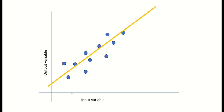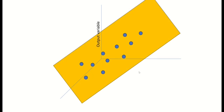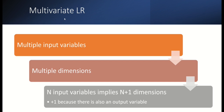Since we have one input variable here, that's why it's called univariate linear regression. Now, what if we have two input variables and one output variable? In that case, instead of a line, we'll be fitting a plane through the points. Since there are two input variables involved, it's called bivariate linear regression.